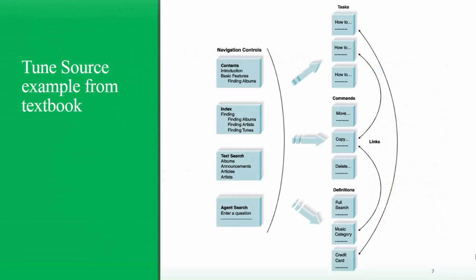I like the ToonSource example included in the textbook. You can see the different squares on the screens are the different reference documents — these could be tutorials, procedure manuals, etc. They're organized into tasks, commands, and definitions. And you can see that you can get to any of those through any of the five navigation controls: a table of contents, an index, a text search, an agent search, or by linking between each other.